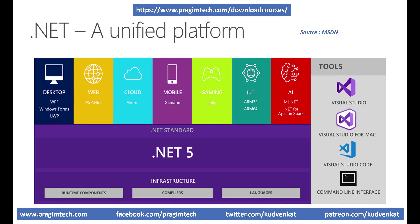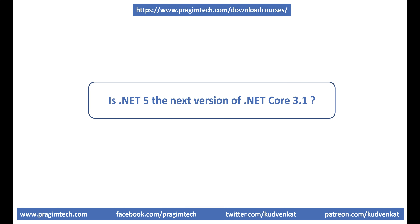Can we call .NET 5 as the next version of .NET Core 3.1? Yes. All features of .NET Core such as cross-platform functionality, modular development, containerization, side-by-side installations, cloud and Visual Studio integrations are maintained in .NET 5. Obviously, several new capabilities and functionality are also added. So if you already know .NET Core, then you also know .NET 5, though you will need to get up to speed with the new features. The development patterns and APIs we use in .NET 5 are similar to what we already have in .NET Core.